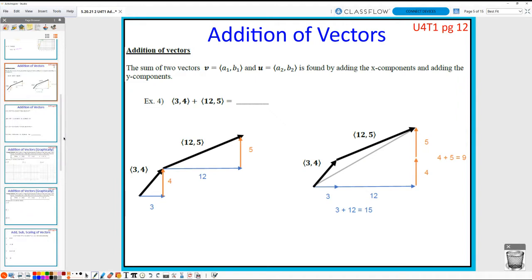Addition of vectors is also pretty simple. There's a couple ways to kind of look at it. But really, essentially, when you are adding two vectors, if V has <A1, B1>, U has <A2, B2>, you would simply add whatever components together. So X1 plus X2, Y1 plus Y2. In this case, you'll take a look. I am going to add my 3 plus 12, that's 15. 4 plus 5, that's 9. And that's it.